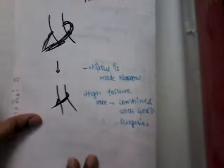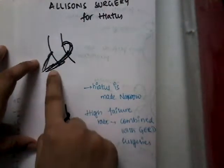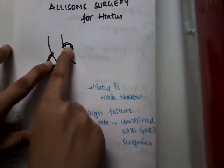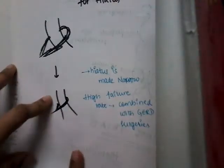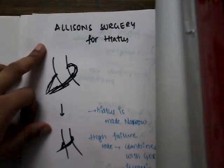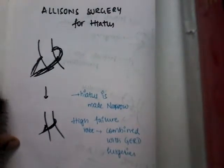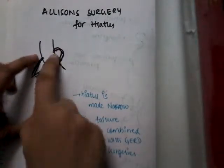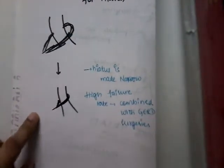An important association with hiatus hernia is Saint's Triad, which includes hiatus hernia, gallstones, and diverticulosis. The classic surgical procedure for hiatus hernia is Allison's repair, where the hiatus in the right crus of the diaphragm is narrowed. However, Allison's surgery has a high failure rate and is therefore always combined with other surgeries.